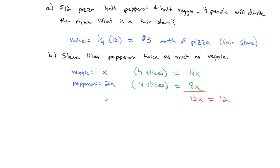And the total pizza costs $12, so x is equal to $1. So a slice of veggie is going to be $1, and a slice of pepperoni, double that, is going to be $2.